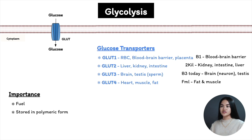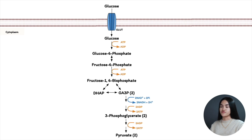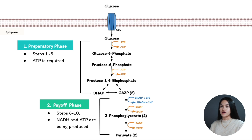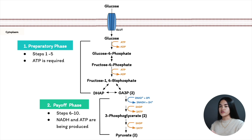Glycolysis occurs in 10 steps and can be broken down into two phases: the preparatory phase and the payoff phase. In the preparatory phase, steps 1 to 5, ATP is required. In the payoff phase, steps 6 to 10, NADH and ATP are being produced. The payoff phase is really when we're harvesting energy in the form of ATP and NADH.